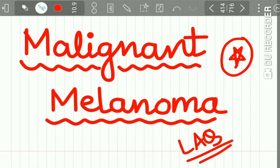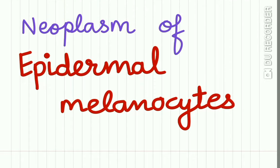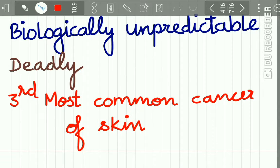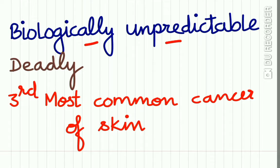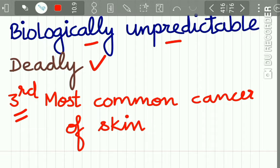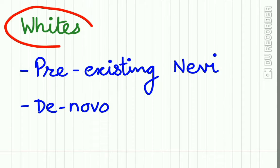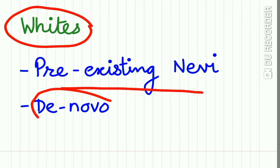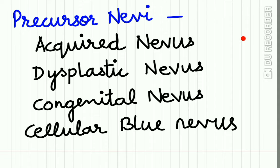Malignant melanoma is a neoplasm of the epidermal melanocytes. It is a biologically unpredictable lesion which is deadly in nature and it is the third most common cancer of the skin. It occurs mostly in whites and may develop from a pre-existing nevus, or malignant melanoma may also occur de novo in the skin. The precursor lesions include acquired nevus, dysplastic nevus, congenital nevus, and cellular blue nevus.